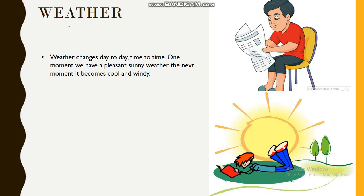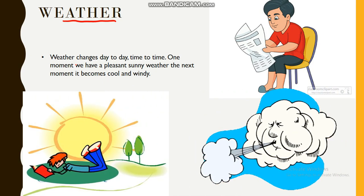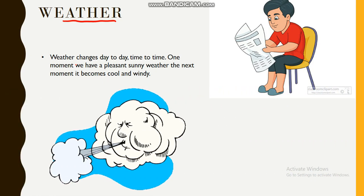First we are going to talk about weather. What is weather? Weather can change from day to day, time to time. For example, let's say you are reading a newspaper having pleasant sunny weather. The next moment it becomes cool and windy and blows away your newspaper. So, the weather had changed — weather can change in moments.